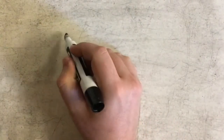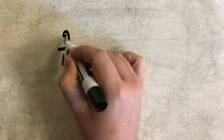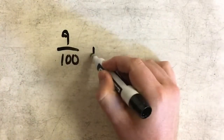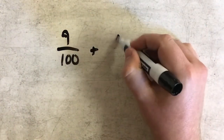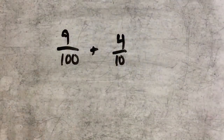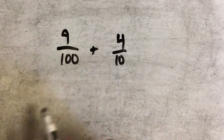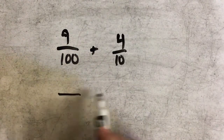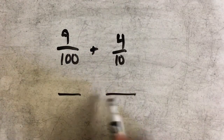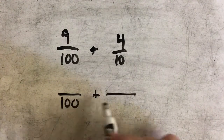Let's do one more example. Here, let's do 9 hundredths plus 4 tenths. Again, I cannot add with different denominators, so I'm going to change both of those denominators to be the same denominator, which is 100.